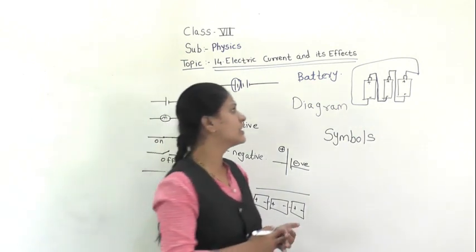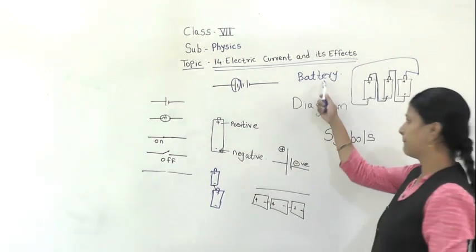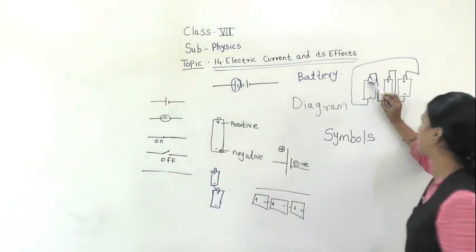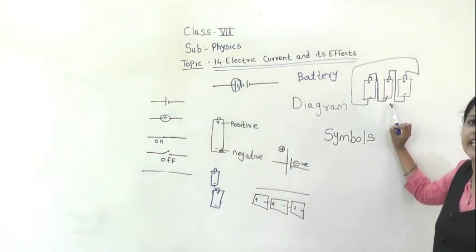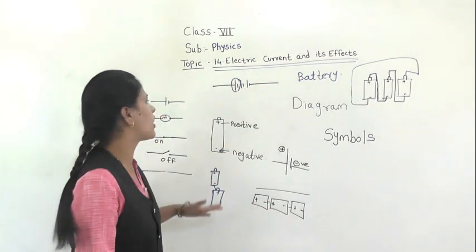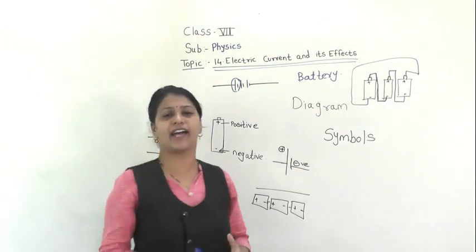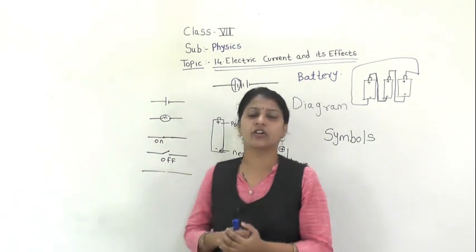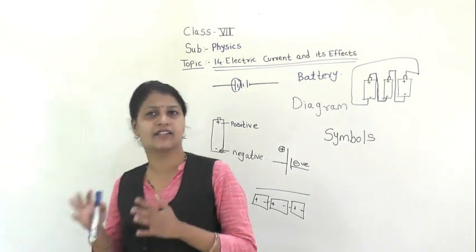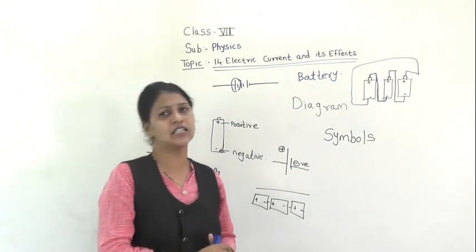The positive terminal of one cell is connected to the negative terminal of the next cell — that is how this connection is done. This combination of one or more cells is called a battery. The connection should be like this: positive terminal of one cell connected to negative terminal of the next. For every electric component we need a symbol, so that we can draw a circuit diagram — it makes it very easy.